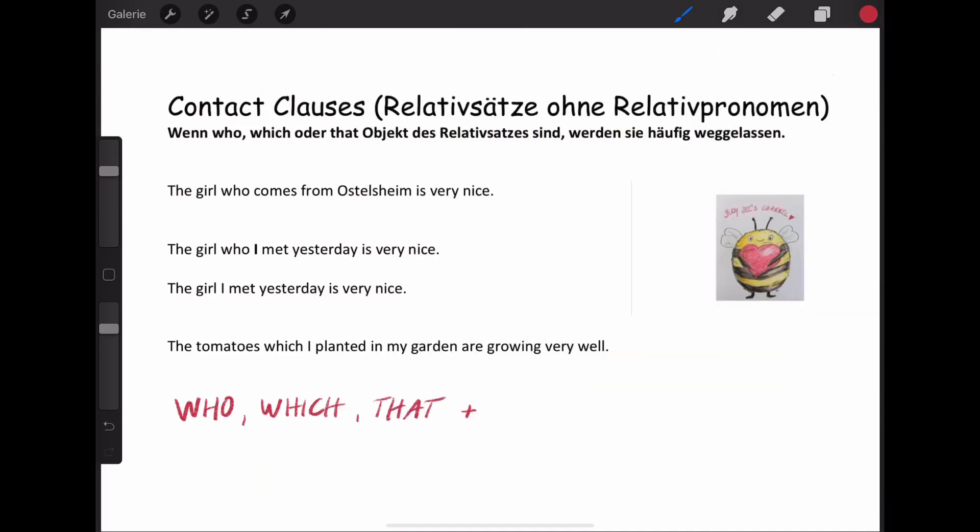The ninth and tenth graders might need the contact clauses. Contact clauses are relative clauses without the who, the which or the that. Relativsätze ohne Relativpronomen. Und hier steht, when who, which or that Objekt des Relativsatzes sind, werden sie häufig weggelassen. Ja. Super. Das Problem ist nur, was ist denn das Subjekt? Was ist das Objekt? Ihr habt da mega Schwierigkeiten. Ich kann euch das nicht verübeln. Das ist nicht einfach. Aber es gibt einen Trick, wie man rausfinden kann, ob man es weglassen kann. Das ist mein Persönlicher Trick.